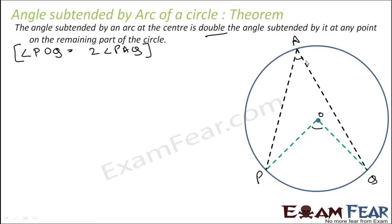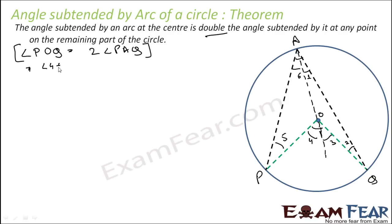Let us try to prove this. To prove this, join AO. We have to prove that angle POQ equals twice angle PAQ, or that angle 4 plus angle 3 equals twice of angle 6 plus angle 1. That is what we have to prove.